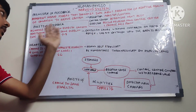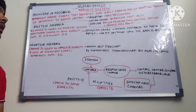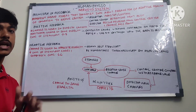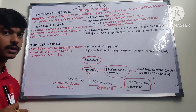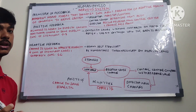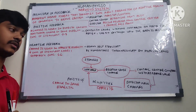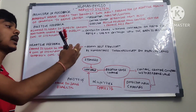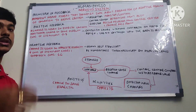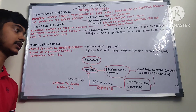In negative feedback, the change is in the opposite direction and the stimulant is decreased — this is for self-control. Example: thermoregulation by the hypothalamus. If a person has fever, the body tries to return to homeostasis at 37 degrees Celsius. The hypothalamus does not increase the fever further; instead, it causes thermoregulation to bring the body back to normal temperature.